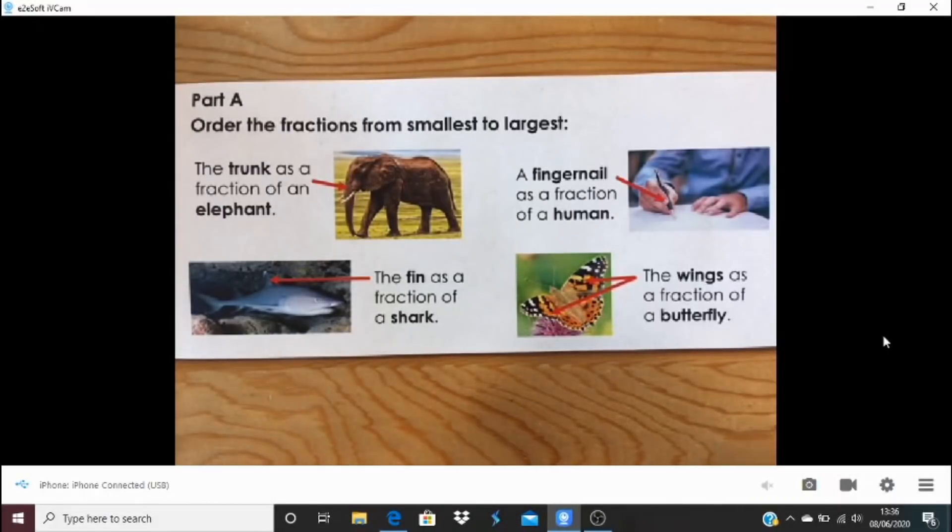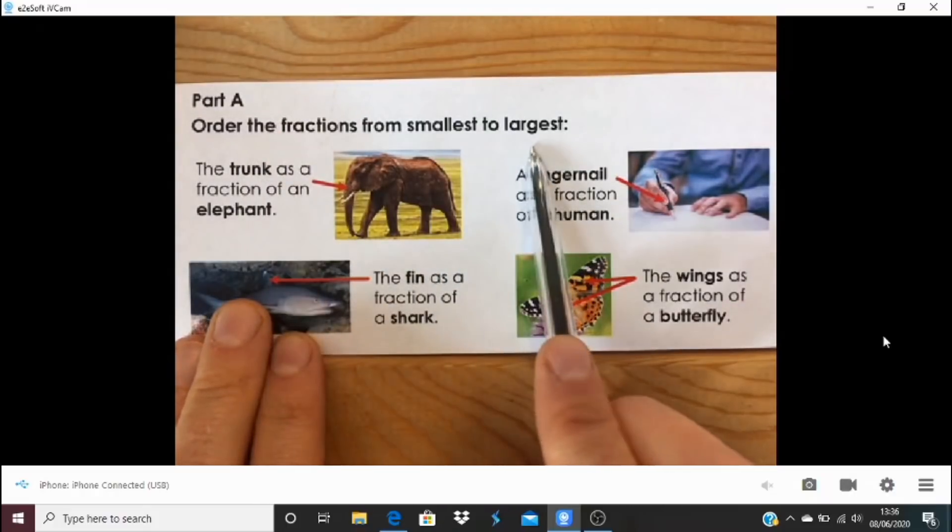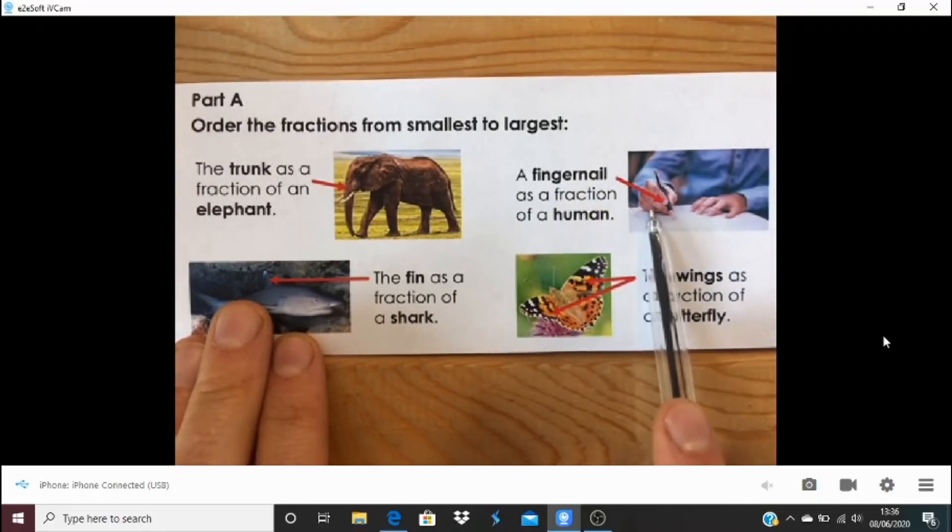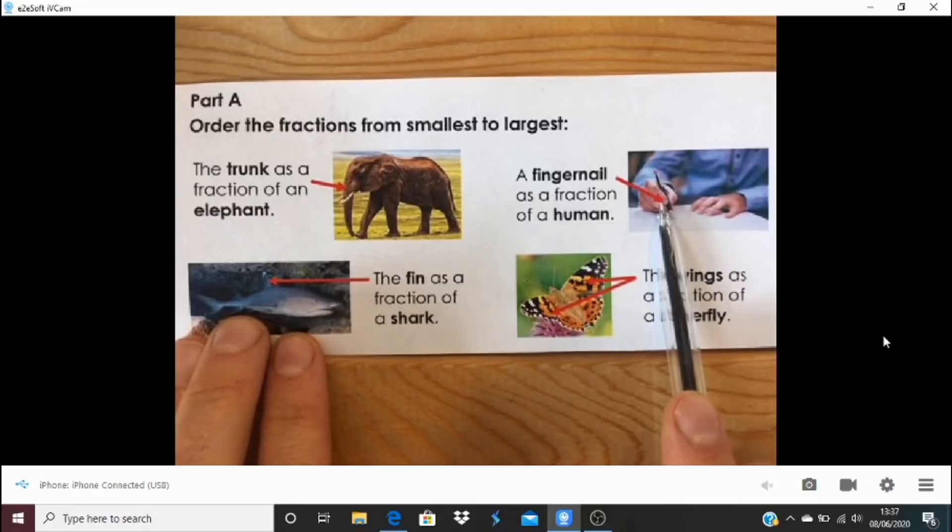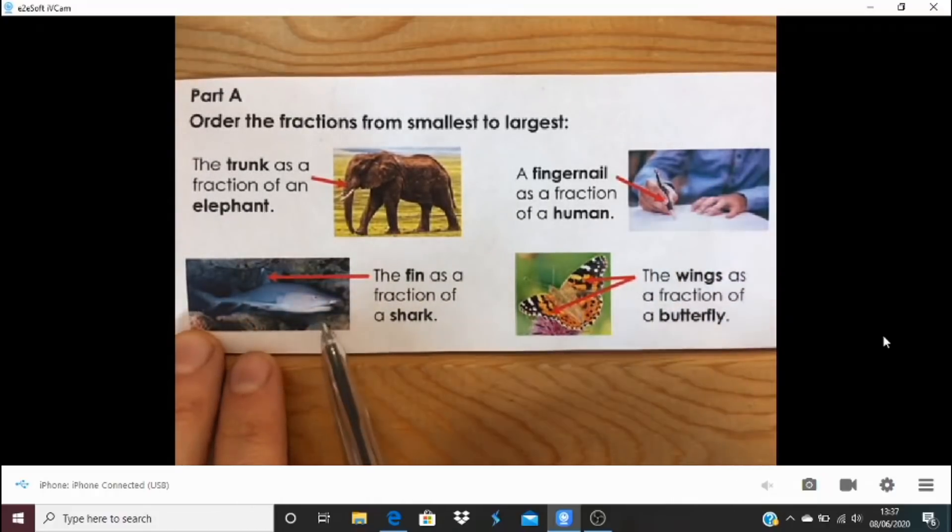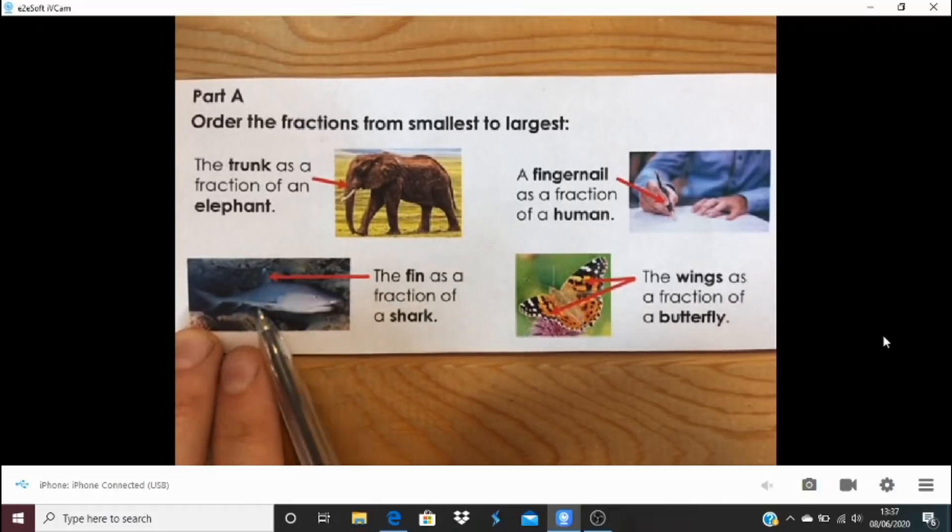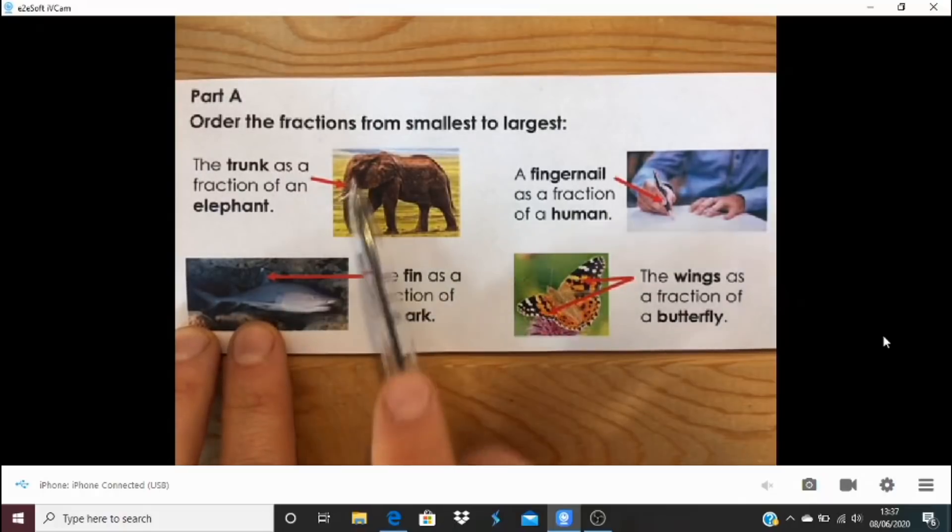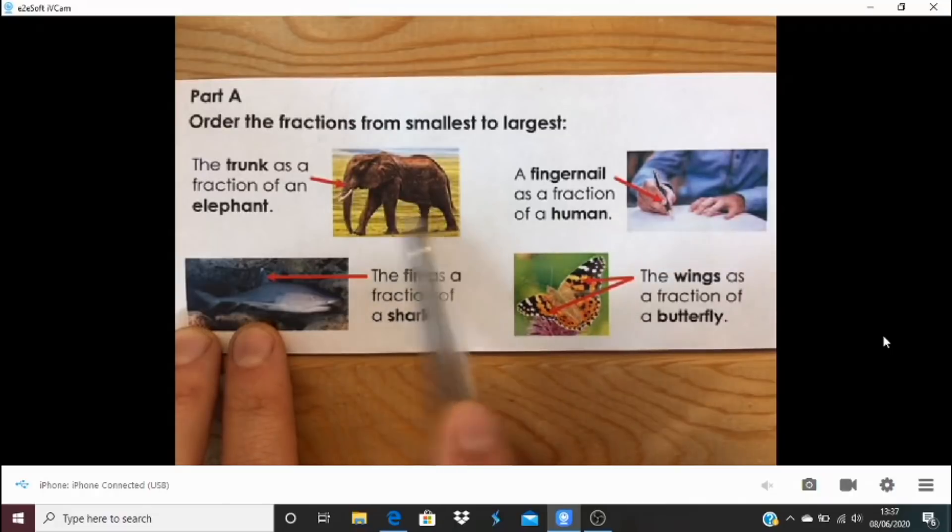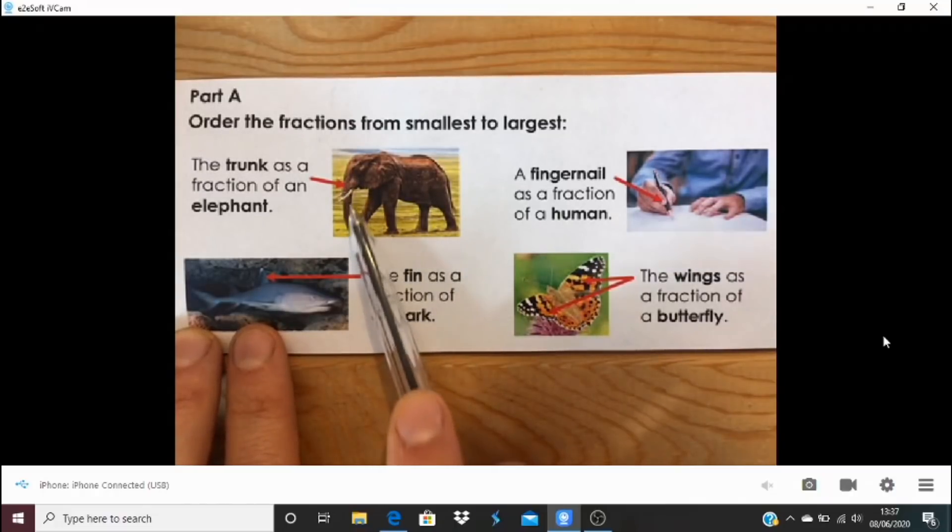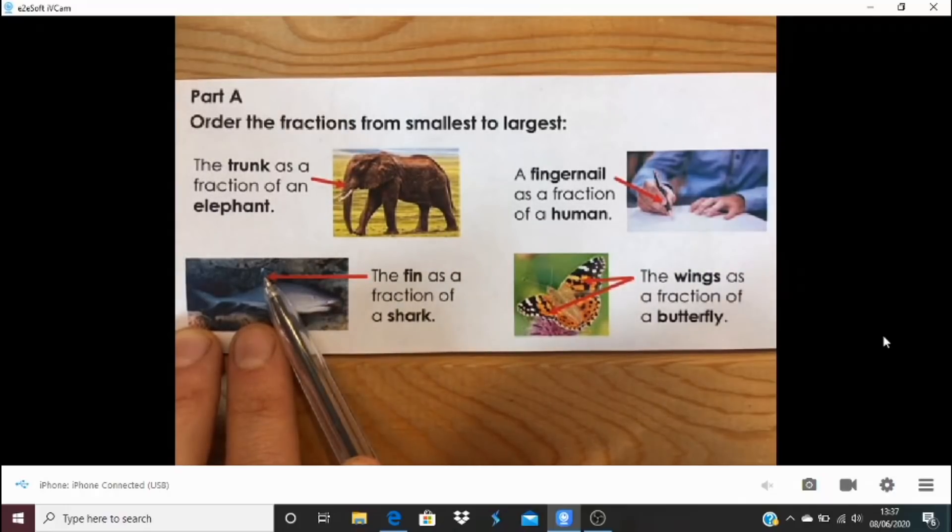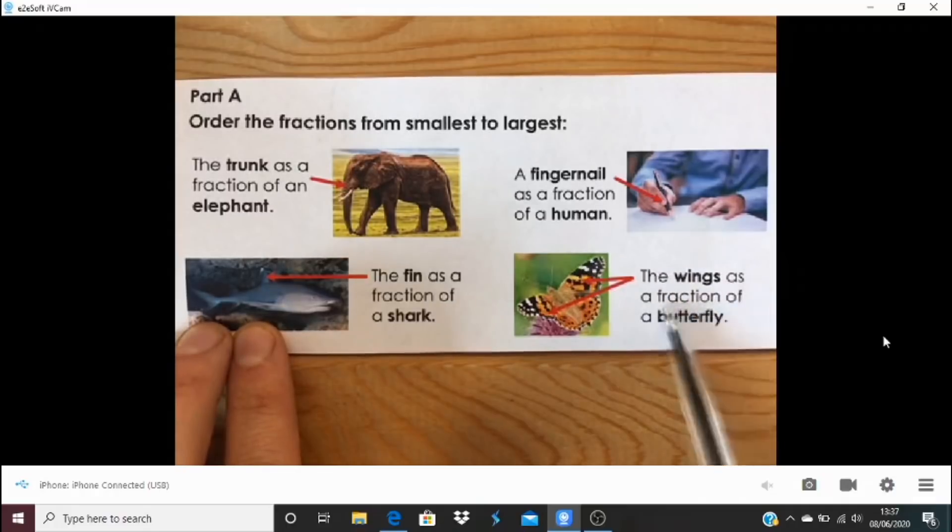I thought we'd start with a little recap from yesterday's task - order the fractions from smallest to largest. I thought a fingernail as a fraction of the human would be the smallest. How many fingernails fit inside of a human the same size? Then the fin as a fraction of a shark - a very small part of the whole shark. Then the trunk as a fraction of an elephant, way less than half, probably less than a tenth. And our largest is the wings as a fraction of a butterfly. Apart from the human fingernail, I think the wings would be the next smallest thing, but as a fraction of a butterfly, I would say more than half.